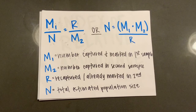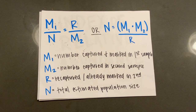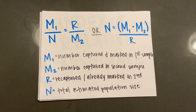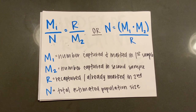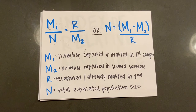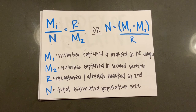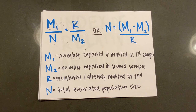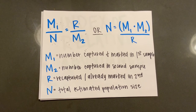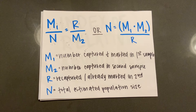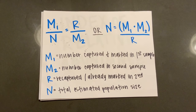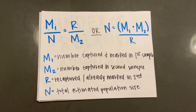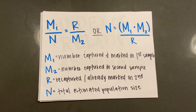The equation for this method is m1 / n = r / m2, or n = (m1 × m2) / r, where m1 is the number captured and marked in the first sample, m2 is the number captured in the second sample, r is the number recaptured or already marked in the second sample, and n is the total estimated population size.